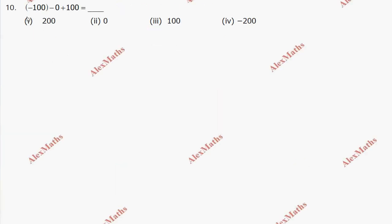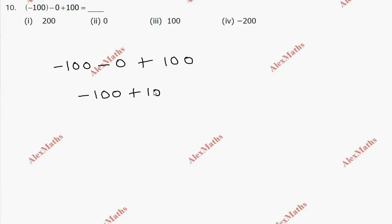Question number 10: minus 100 minus 0 plus 100. So minus 100 minus 0 equals minus 100. If we add plus 100, we add 0. So we are going to add option 2.